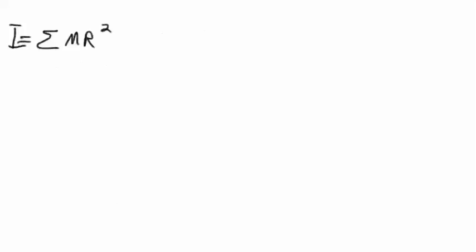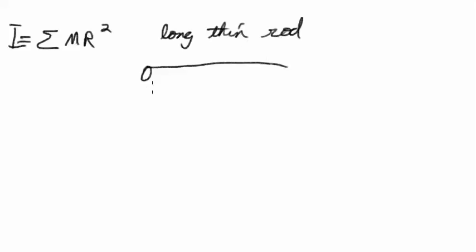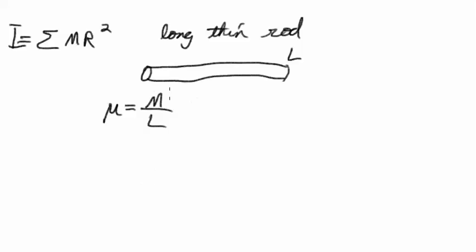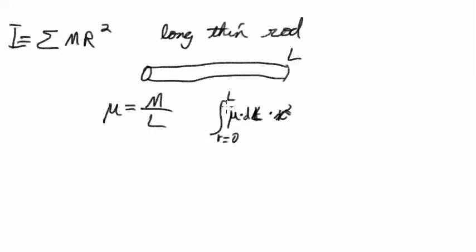I want to do a moment of inertia calculation for a long thin rod. I'm going to imagine that it is of length L and it has a linear density of mass over L in kilograms per meter. I'm going to be integrating mu dL times R squared, going from R equals zero to L, and basically I'm going to be imagining rotating it around that end.